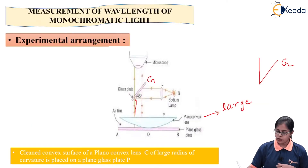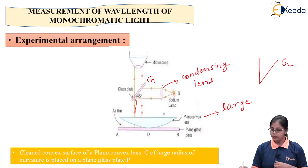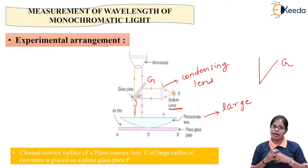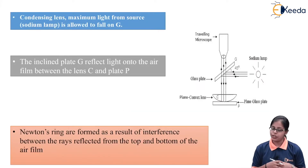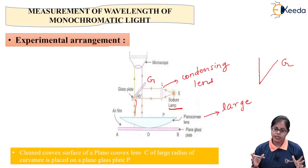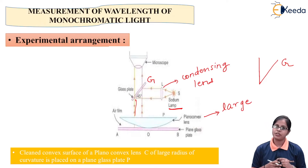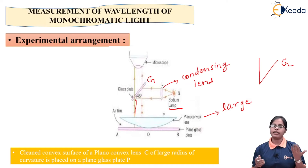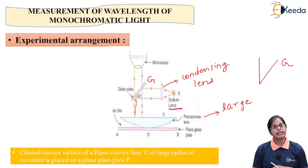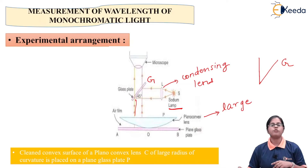We also make use of a condensing lens placed just after the source of light, that is the sodium lamp. The condensing lens collects the maximum amount of light and allows it to fall on the glass plate G. So the full arrangement consists of a properly cleaned plano-convex lens with large radius of curvature placed on a plain glass plate, glass plate G at 45 degrees for normal incidence, and condensing lenses for maximum light collection.